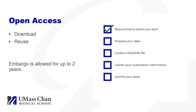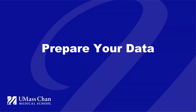This completes the basic requirements you need to know before submitting your data. If your data does not meet these requirements, please do not submit it to the e-Scholarship at UMass Chan repository. You can contact the librarians at the Lamar Souter Library for assistance in locating a more appropriate data repository. Now that we have covered the basic requirements, we will move on to preparing your data.